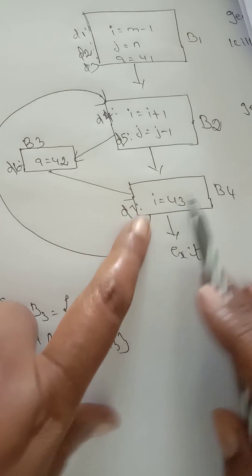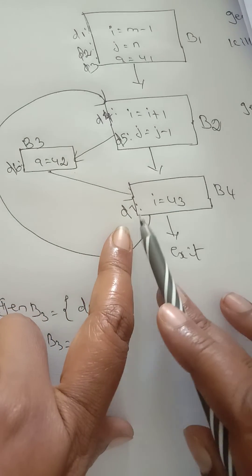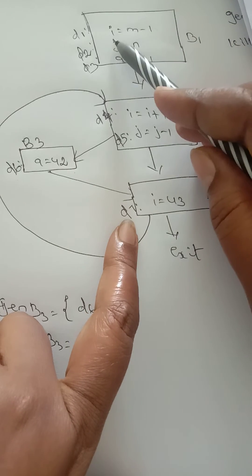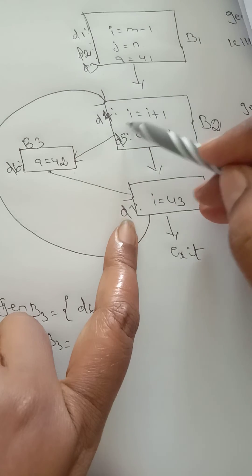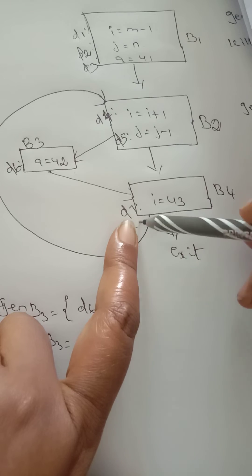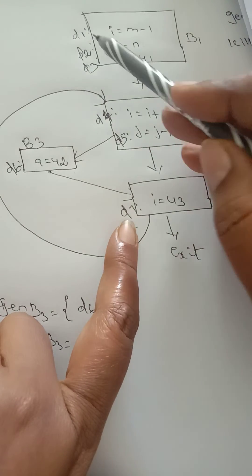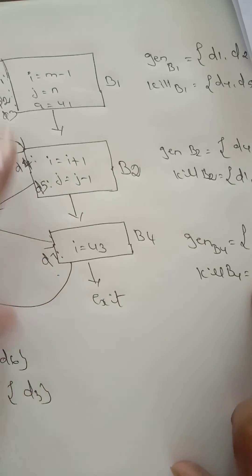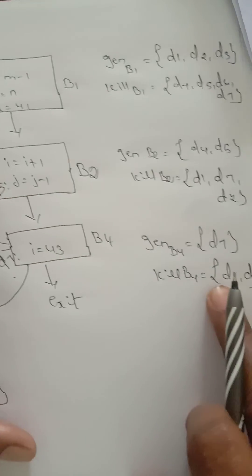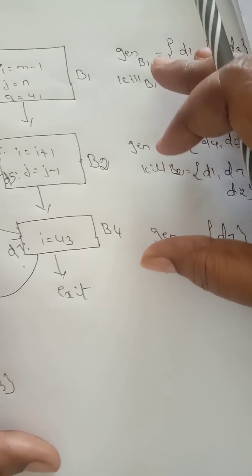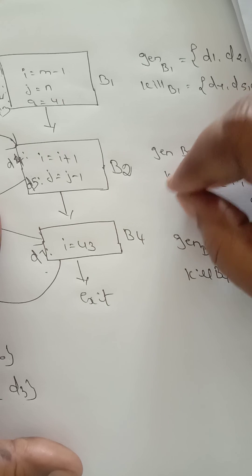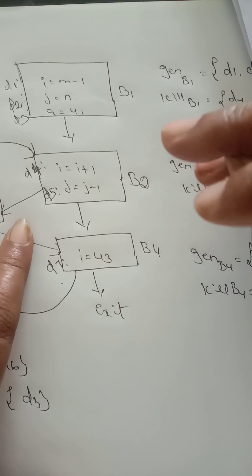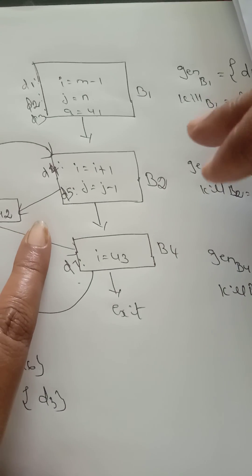In block four we have i equal to u3, that is D7. We check where variable i is defined elsewhere — in block one i equal to m minus one (D1) and in block two i equal to i plus one (D4). So while executing D7, we remove D1 and D4. Generation of B4 equals {D7}, kill of B4 equals {D1, D4}. This is data flow analysis — while executing your program, you check what data are currently needed for each block and what variables are not needed.